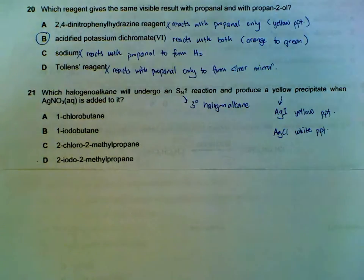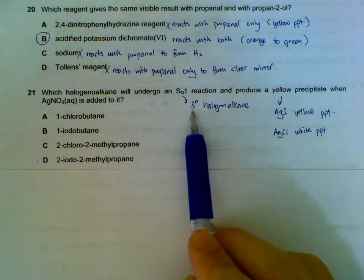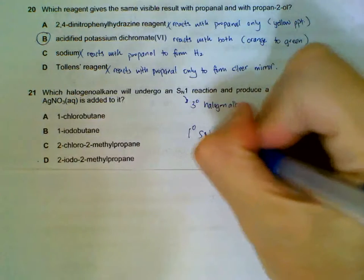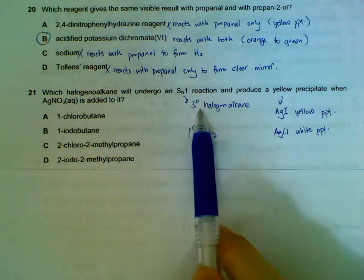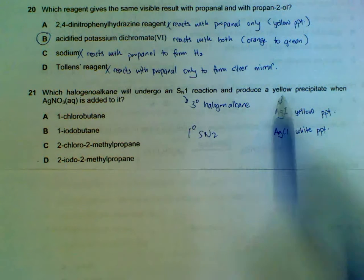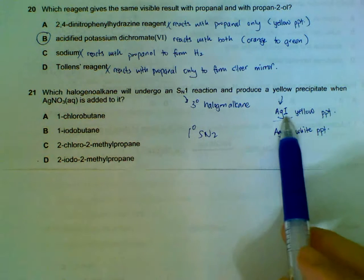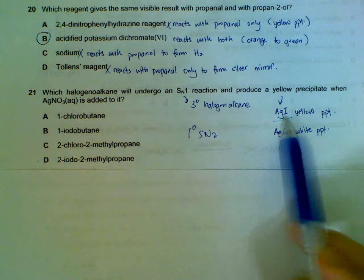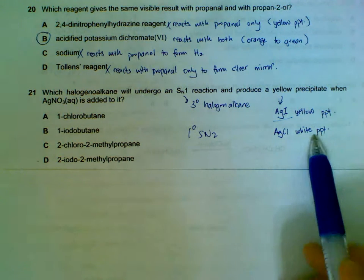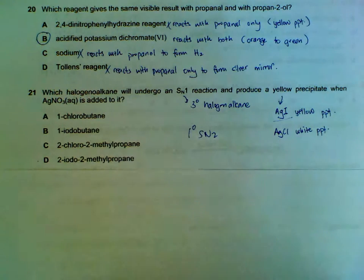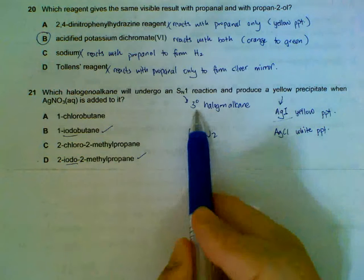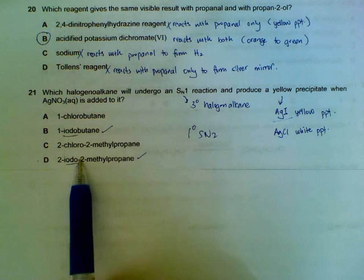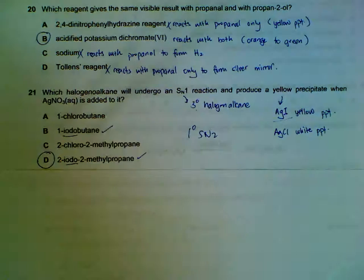A halogen alkane that will undergo an SN1 reaction. That means it's giving us a clue that it's a tertiary halogen alkane. Primary will tend to undergo SN2. Secondary, could be SN1, could be SN2. So we know that it's a tertiary halogen alkane. A yellow precipitate is indicating that the halogen involved is an iodine, an iodide. That gives us yellow. If it was chloride, then it would be white. So if you look down the options that we have, we look for the iodine, and then we look for the one that is a tertiary halogen alkane. This one is primary. D is a tertiary halogen alkane.